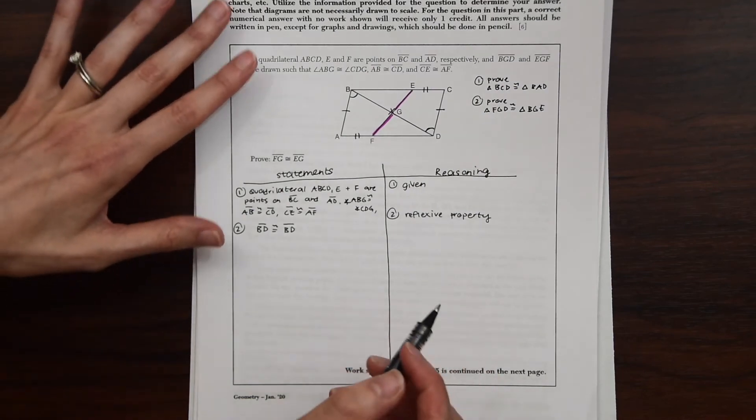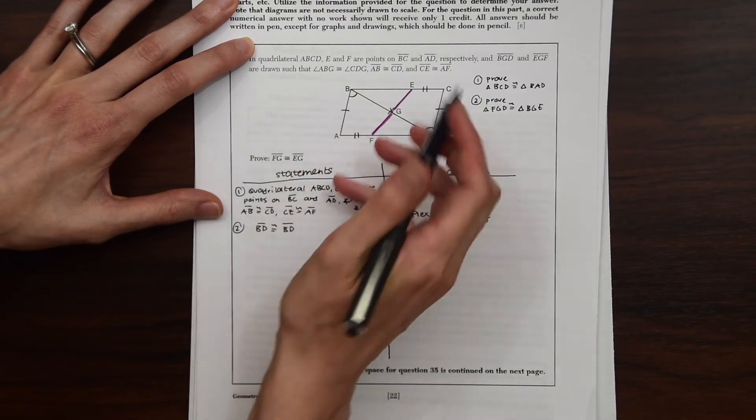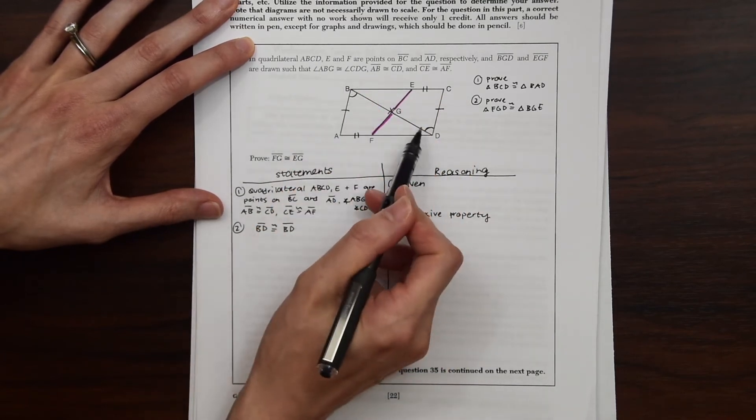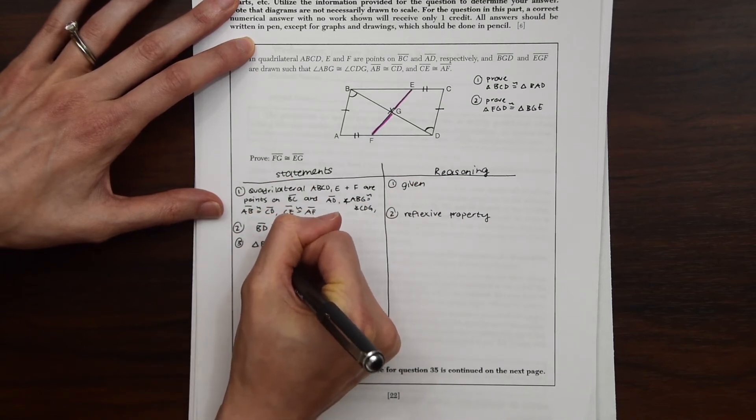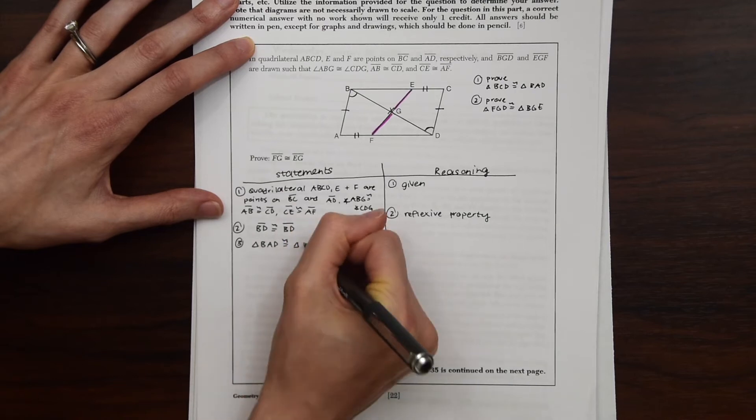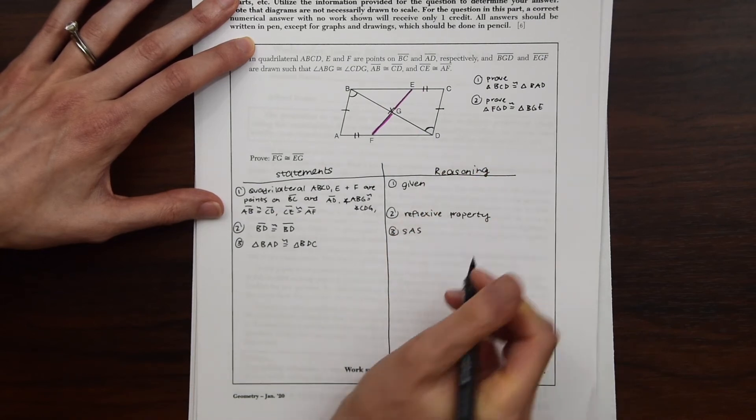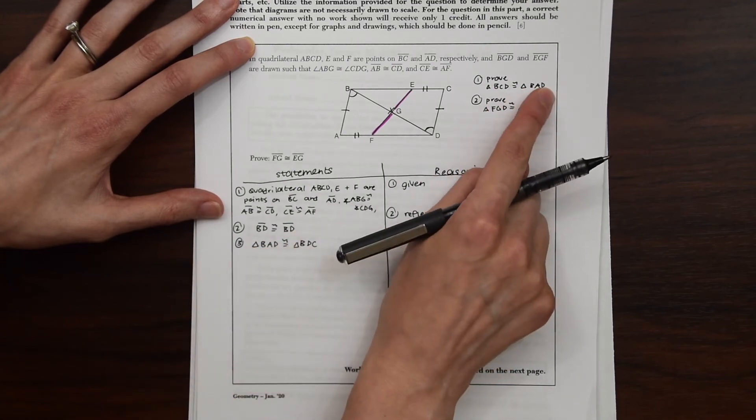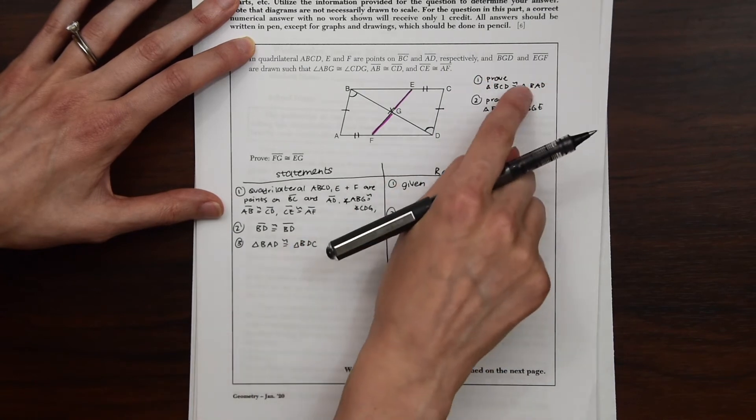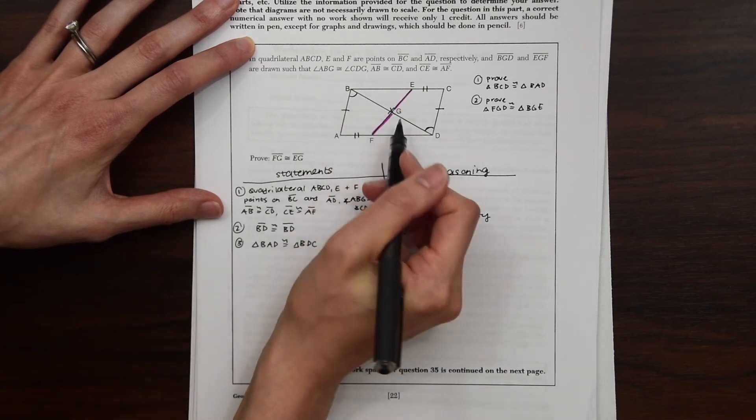So already, we actually can prove these two triangles congruent because we were given this side and this side. We have a side, we have the angles we were given, and then we have this other side. So we can right away say that triangle BAD is congruent to triangle BDC based on side angle side. So I just re-ordered the letters a little bit, BCD, BAD. But this is exactly what we were set out to do.